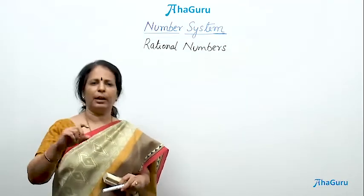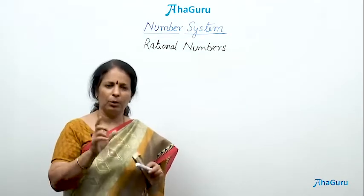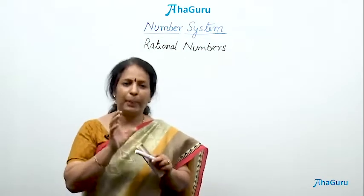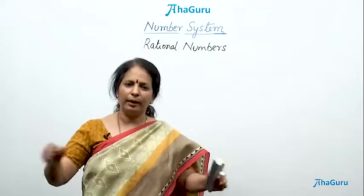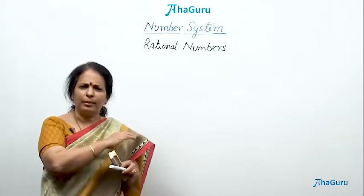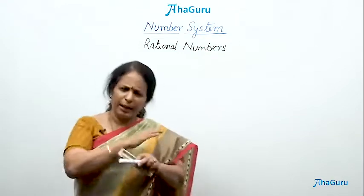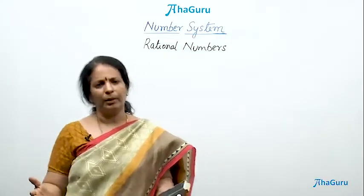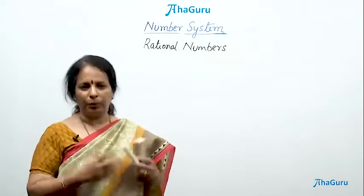We saw in the number line that between any two numbers, whole numbers or integers, there are infinite number of rational numbers just packed there. We went on magnifying and found new and new numbers inside them. So it seems there are, between any two natural numbers, any two fractions, any two decimal numbers, there are again infinite numbers. Suppose you are asked to find few of them.